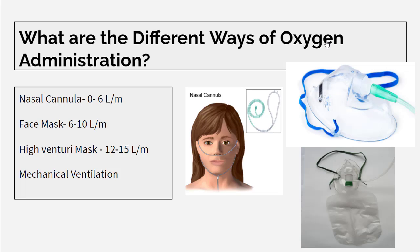What are the different ways of oxygen administration? There are two ways: invasive and non-invasive. The non-invasive method includes nasal cannula, face mask, high-flow Venturi mask, CPAP, and BiPAP. Up to 6 liters of oxygen can be given through nasal cannula; 6 to 10 liters per minute through face mask; and 12 to 15 liters per minute through a high-flow Venturi mask. The invasive method includes endotracheal tube and tracheostomy tube.